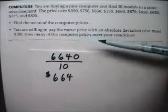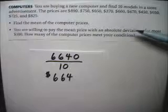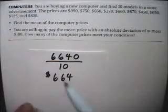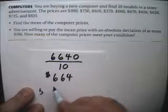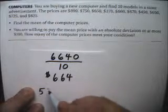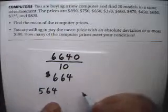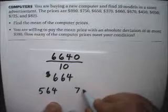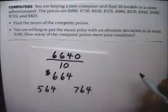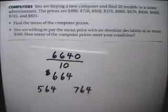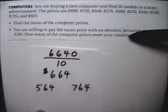It says you are willing to pay the mean price with an absolute deviation of at most $100. So that means you are willing to pay $564, and you are also willing to pay $764.